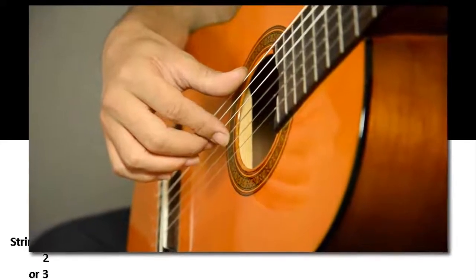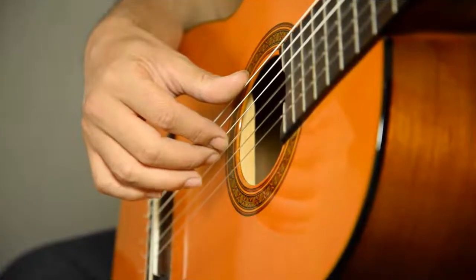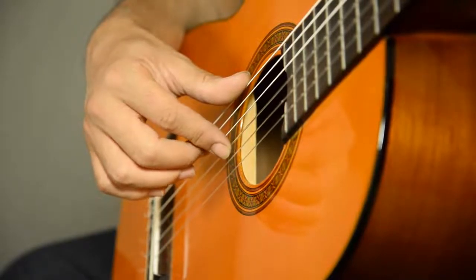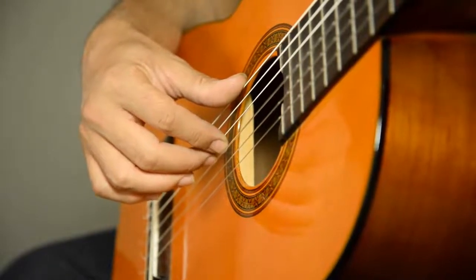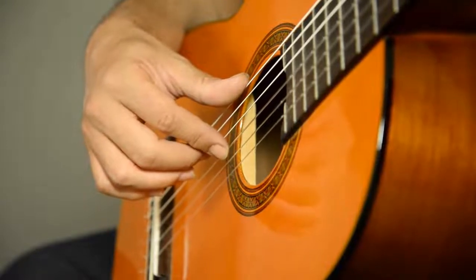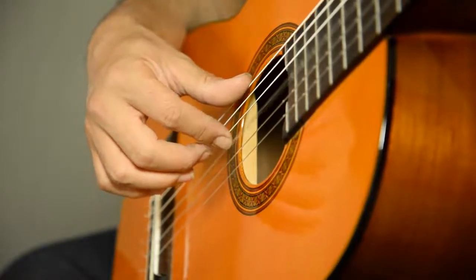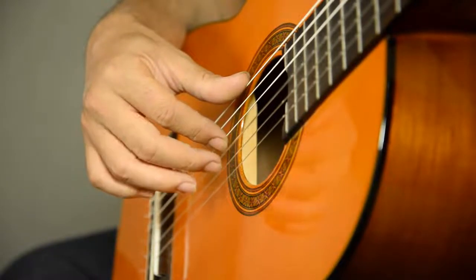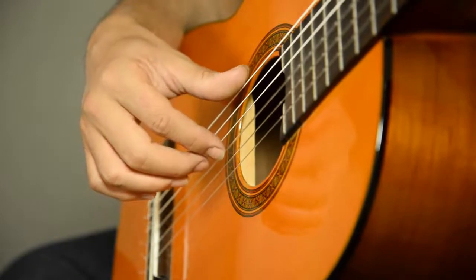Now, sometimes this happens. You see that sound? When you play with the I, the M touches the string. That means your fingers are too, the middle finger is too close to the string. So, you can do this.